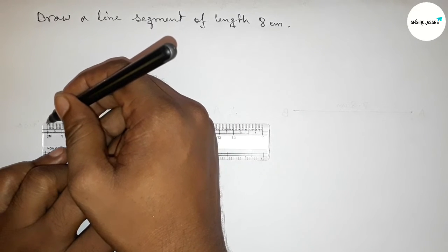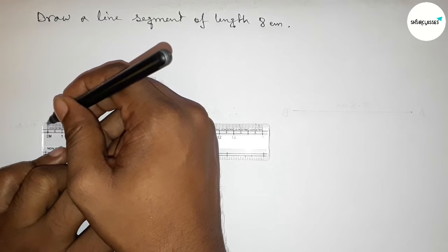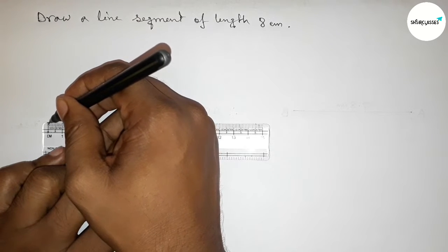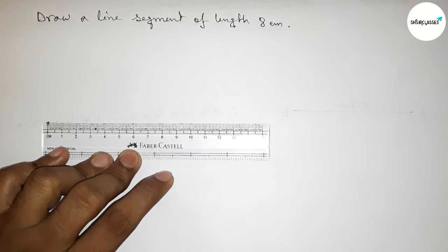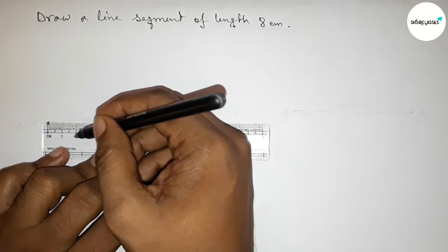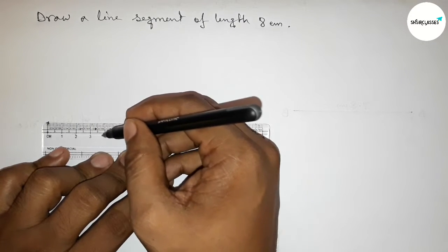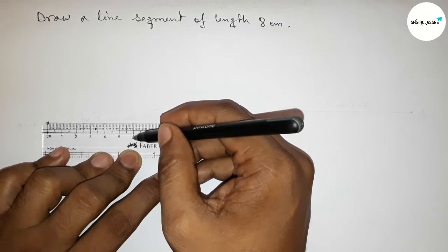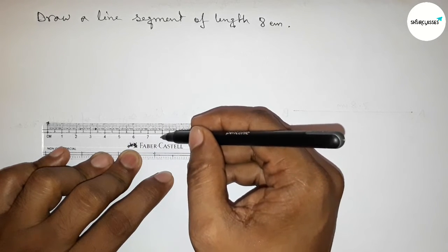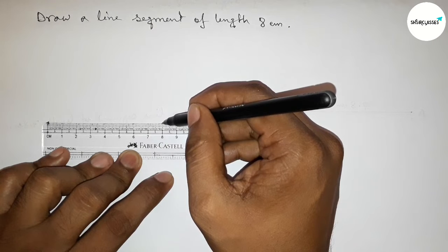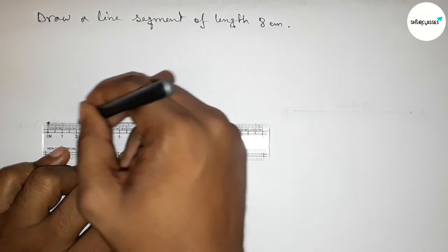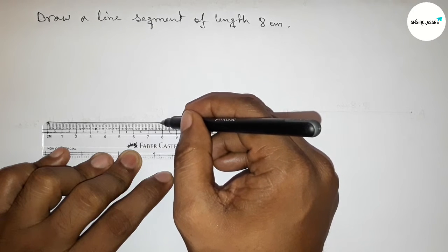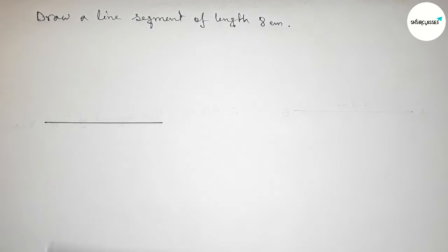This is the starting zero, so first mark the starting zero, then count: zero, one, two, three, four, five, six, seven, and this is eight centimeters. So mark eight centimeters, then join this line perfectly.